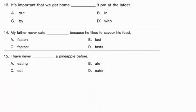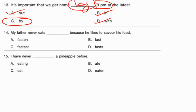'It's important that we get home ___ 9 PM at the latest.' This is about a time limitation — you must reach home not after that time. The preposition for a time deadline is 'by.' We can't use 'out,' 'in,' or 'with.' The correct answer is by. Next: 'My father never eats ___ because he likes to savor his food.' Savor means to enjoy the taste. 'Fast' is the correct adverb — 'fastest' is used when comparing more than two people, but here only one person is mentioned. The correct answer is fast.